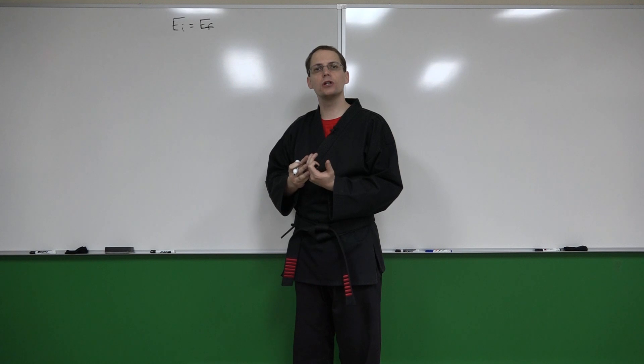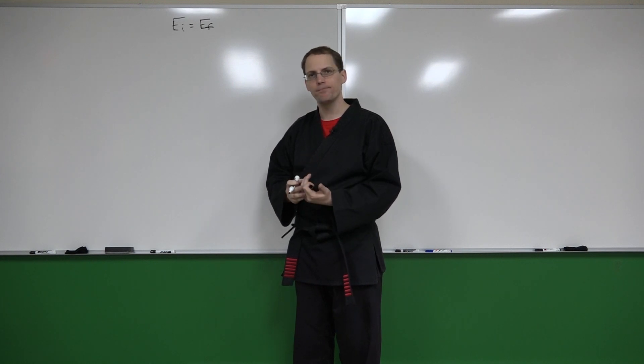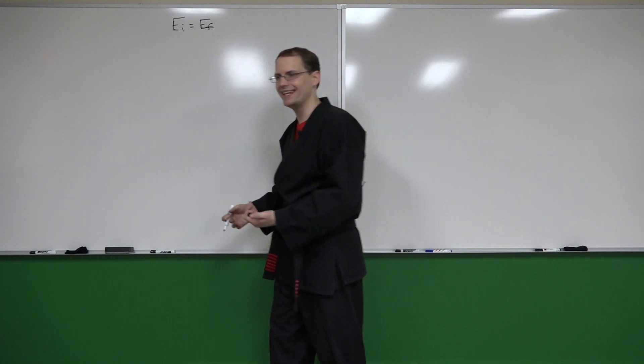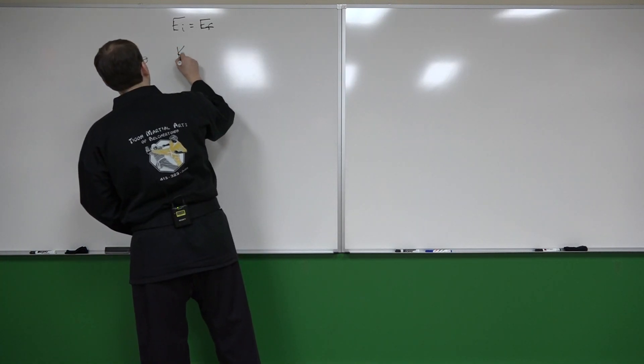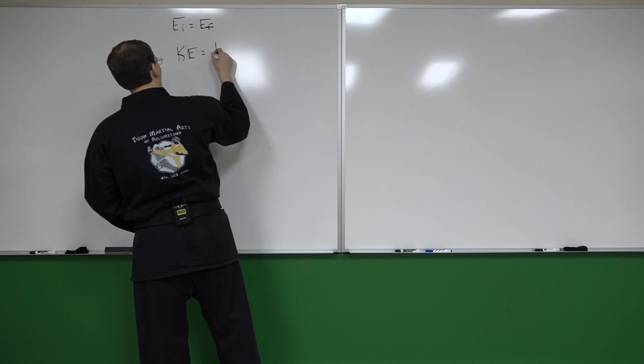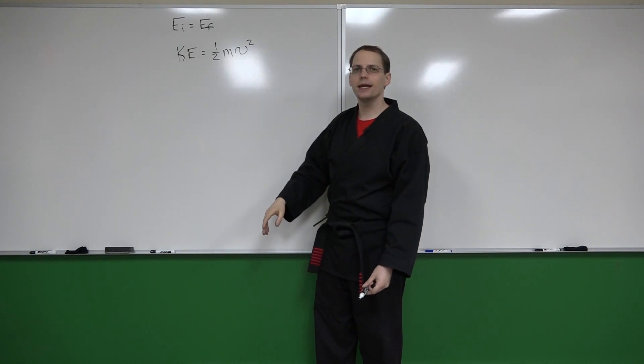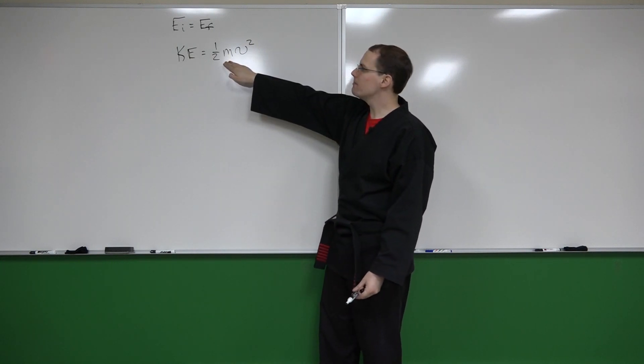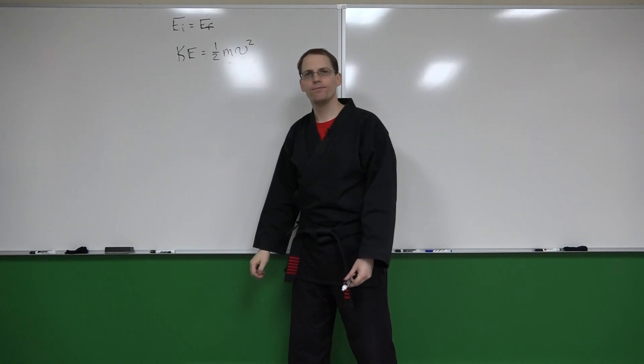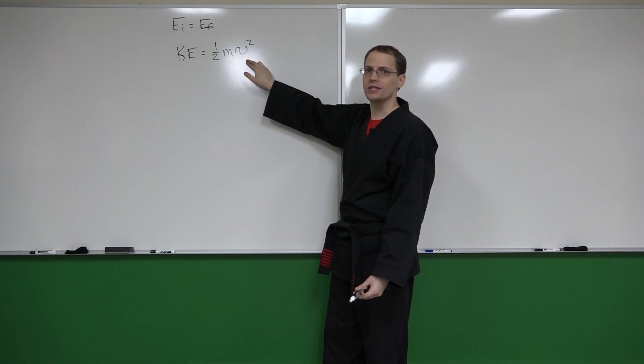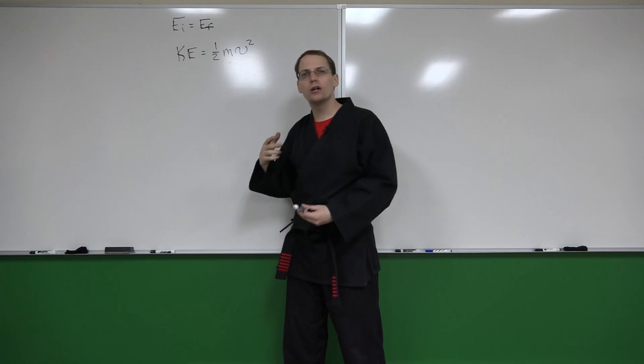So if we have a certain amount of mass that's in motion, that mass has an energy associated with it, an energy of motion. We call that kinetic energy and the kinetic energy is equal to one-half the mass times the speed squared. So what is this telling us? Well, if you double the mass, what happens to the energy? It's going to double. Now if you double the speed, what's going to happen to the energy? It's going to quadruple.